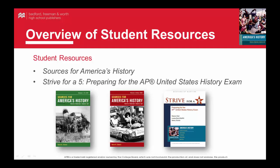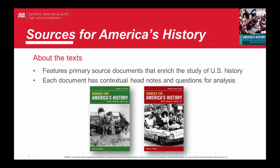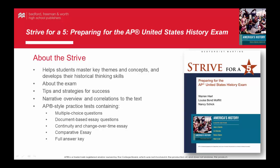There are a number of supplementary resources for students, including the two-volume Document Reader, Sources for America's History, and the Examination Preparation Guide, Strive for a Five. The two volumes of Sources for America's History feature primary source documents that enrich the study of U.S. history, with contextual headnotes and questions for analysis. Strive for a Five helps students master key themes and concepts and develop their historical thinking skills. It contains an About the Exam section, tips and strategies for success, narrative overview, and correlations to the text, as well as AP style practice tests including multiple choice questions, document-based essay questions, continuity and change over time essays, comparative essays, and a full answer key.